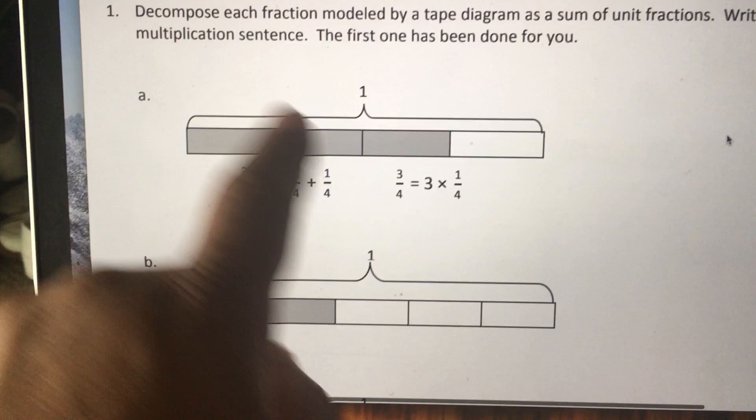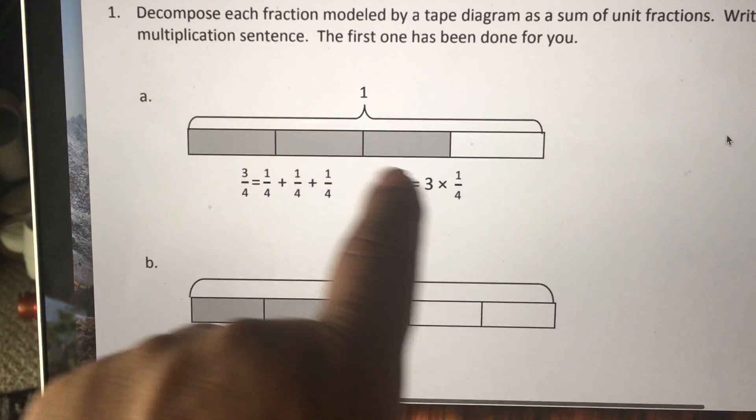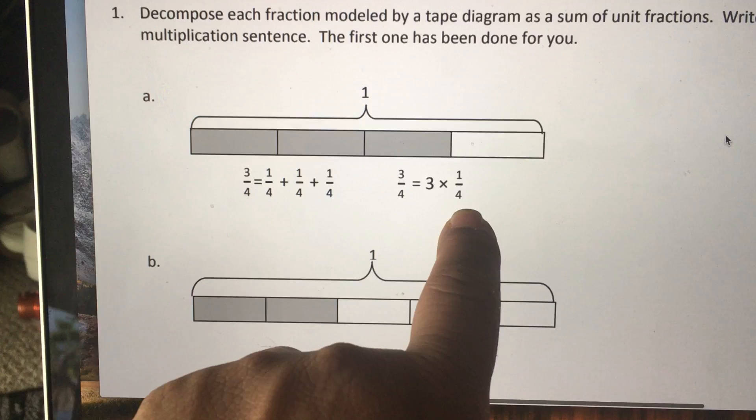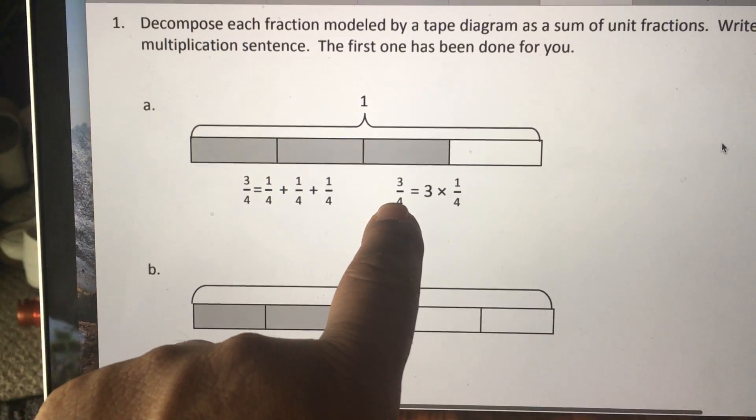Now we're gonna do the multiplication sentence, and you just switch it around. There's three times one-fourth, which is the same as three-fourths.